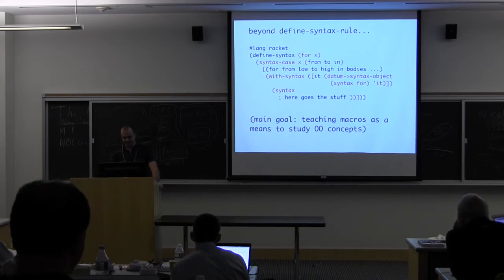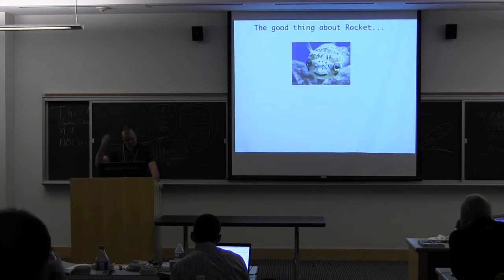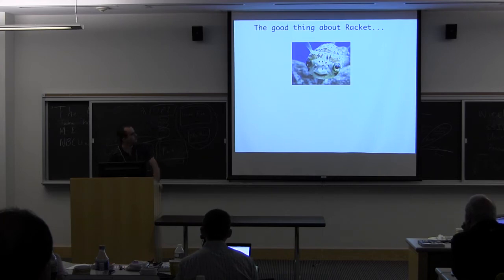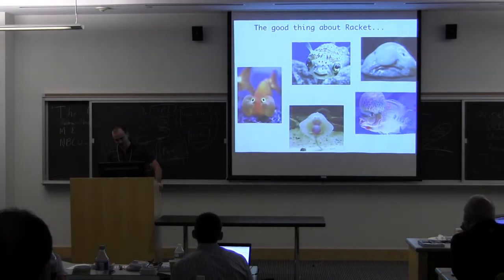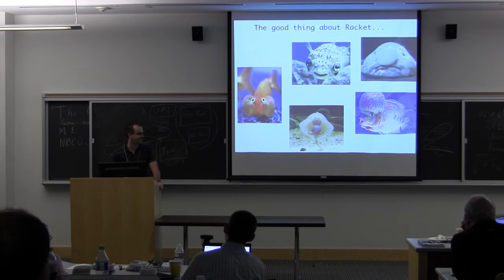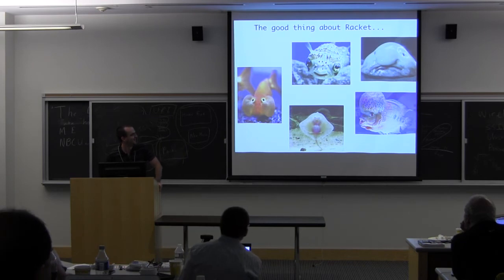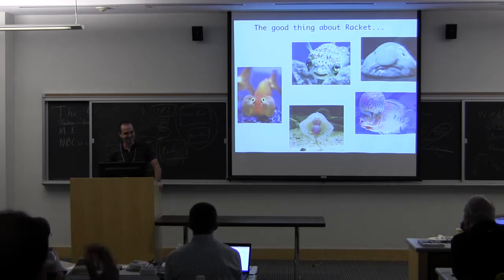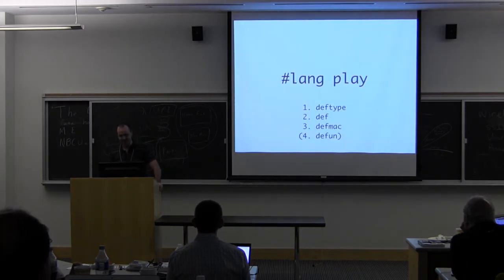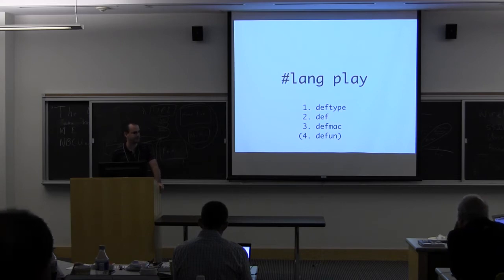And here, my goal is not to teach them how to become macro programmers, but I just want to give them just the minimum so that they can then build their own object system and build on that. So as Matthew told us this morning, one good thing about Racket is that if you give me a fish, then I can think about different fishes and create other ones. So I don't know which one is PLAI and which one is play. Okay. So Hashlang play basically has four stuff, three. So the fourth one is in parentheses because it's not yet fully worked out, but I'm going to talk about the three first ones. So def type, def and def mac.